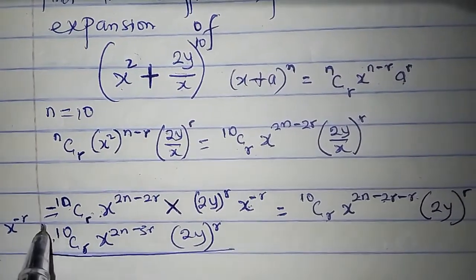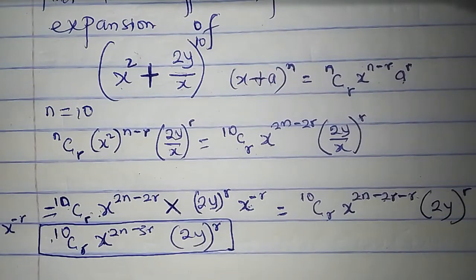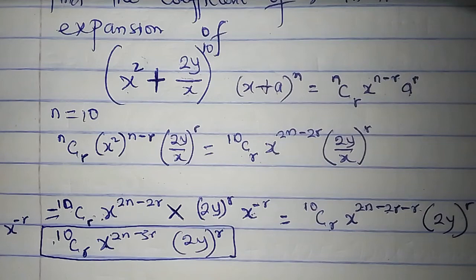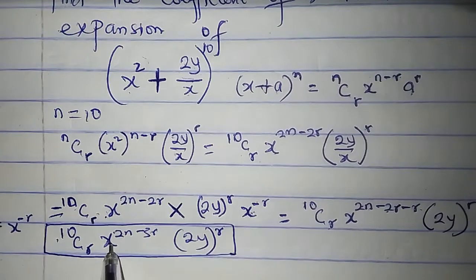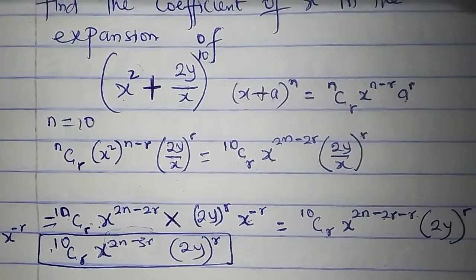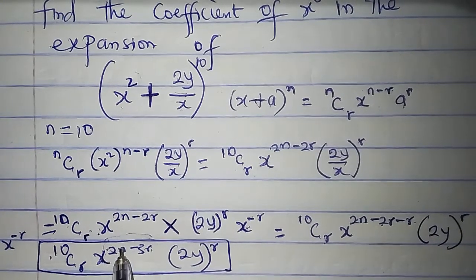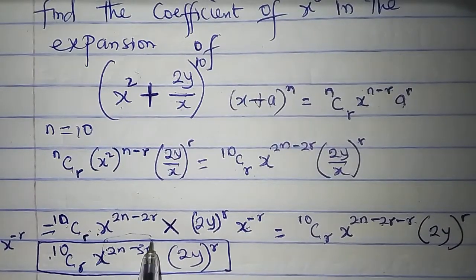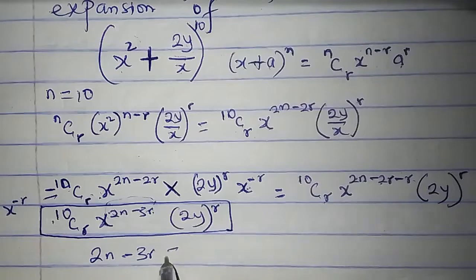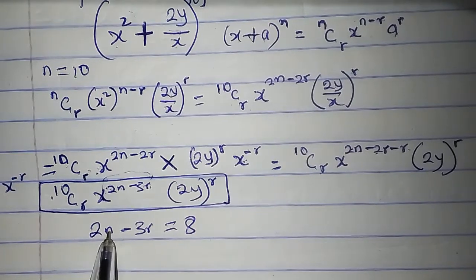When I've gotten this, it becomes easy. We are looking for the coefficient of x raised to the power of 8, which means the power of x must be 8. Here we are having 2n minus 3r, so we must make everything here equal to 8 so that we'll have x raised to the power of 8. To do that, I will set 2n minus 3r equal to 8. The value of n is known, which is 10, so this will be 2 times 10, which is 20.